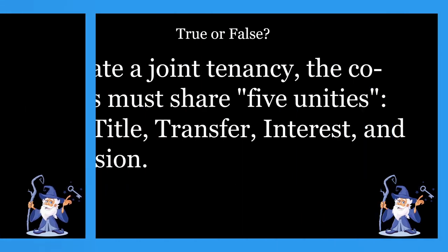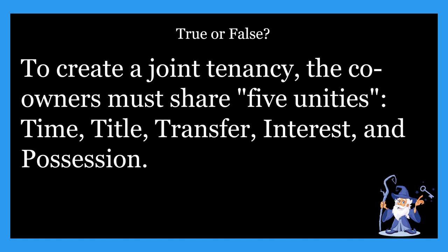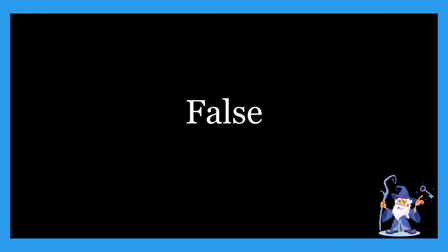Next one: to create a joint tenancy, the co-owners must share five unities — time, title, transfer, interest, and possession. The answer is false. To create a joint tenancy, the co-owners must share four unities, not five. Those four unities are time, title, interest, and possession. There is no such thing as 'transfer' as a unity. Just four unities, not five — making that statement false.